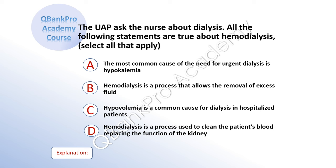The UAP asks the nurse about dialysis. All the following statements are true about hemodialysis. Select all that apply. A: the most common cause for urgent dialysis is hypokalemia. B: hemodialysis is a process that allows the removal of excess fluid. C: hypokalemia is a common cause for dialysis in hospitalized patients. D: hemodialysis is a process used to clean the patient's blood, replacing the function of the kidney.